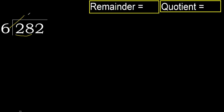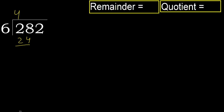6 multiplied by 5 is 30, which is greater. So multiply by 4: 24 is not greater. So we use 4. 28 minus 24 is 4.